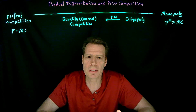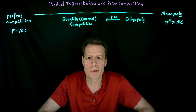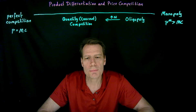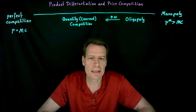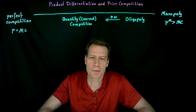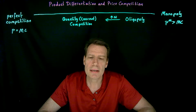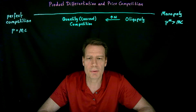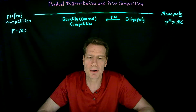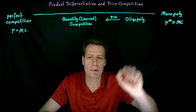We began the course with the market structure called perfect competition, where many small firms produced identical products in an environment where new firms could enter and old firms could exit freely. In that environment, we found that price will be equal to marginal cost. We then jumped to the other extreme of a perfect monopoly — a single firm producing an output with no close substitutes and protected by barriers to entry — and found that the monopoly price is going to be above marginal cost.